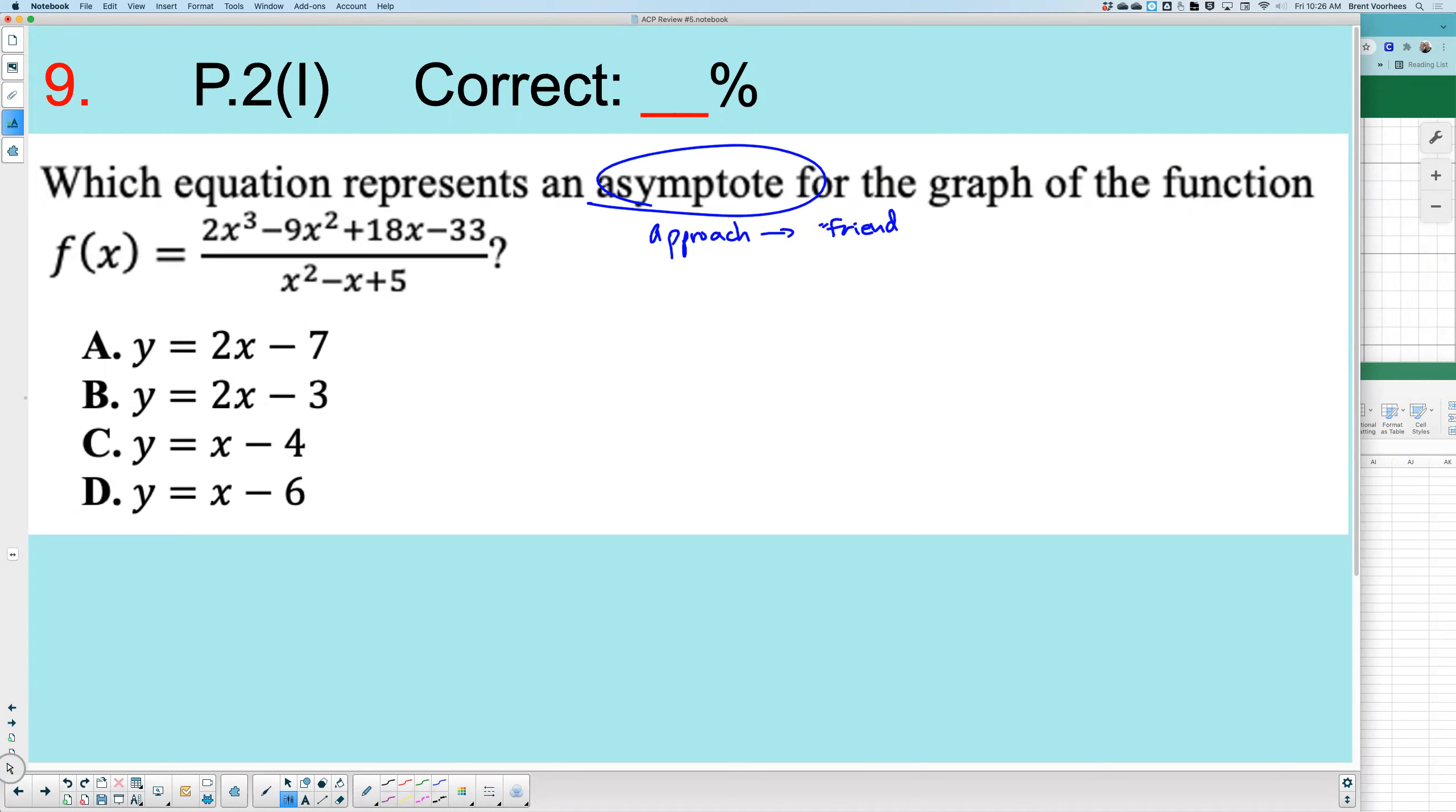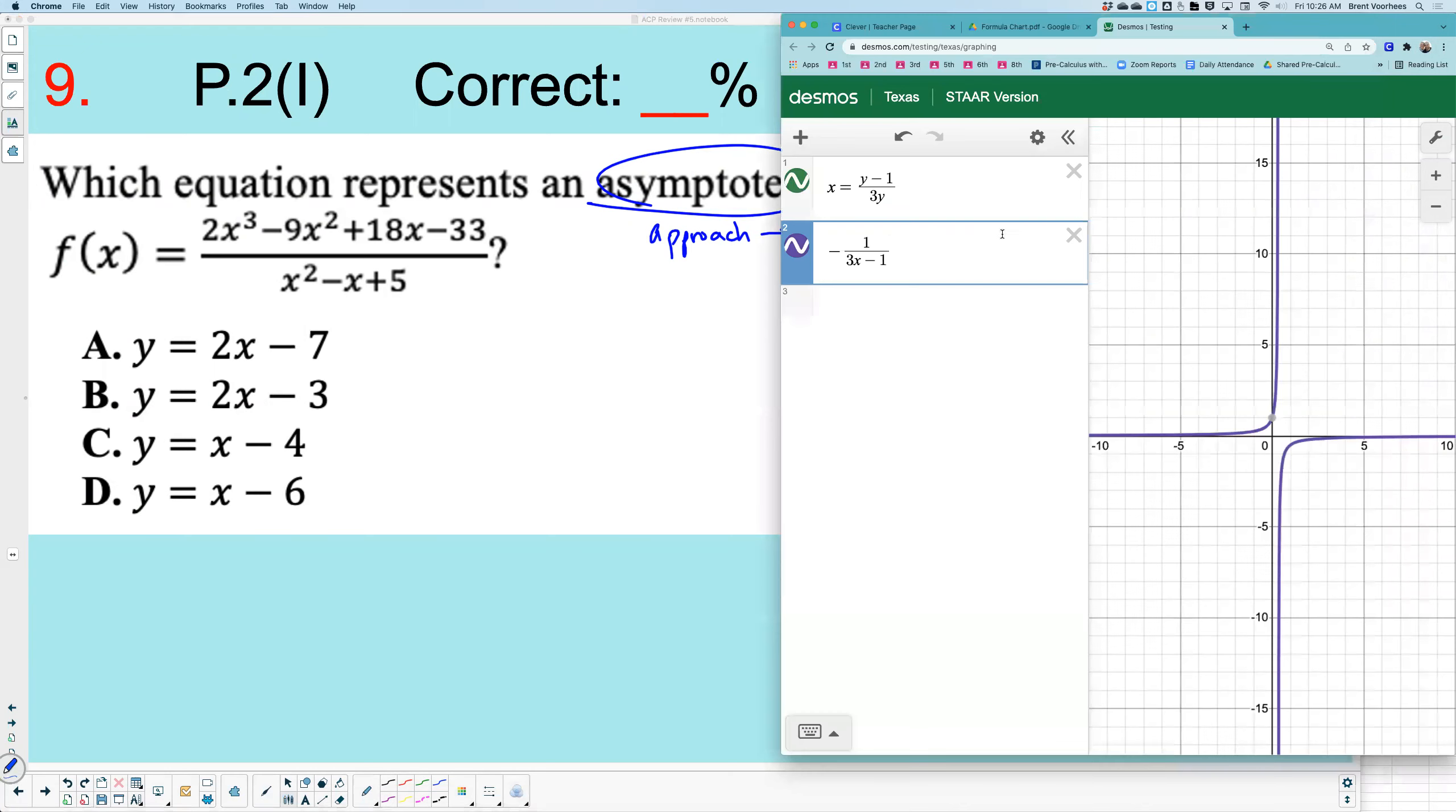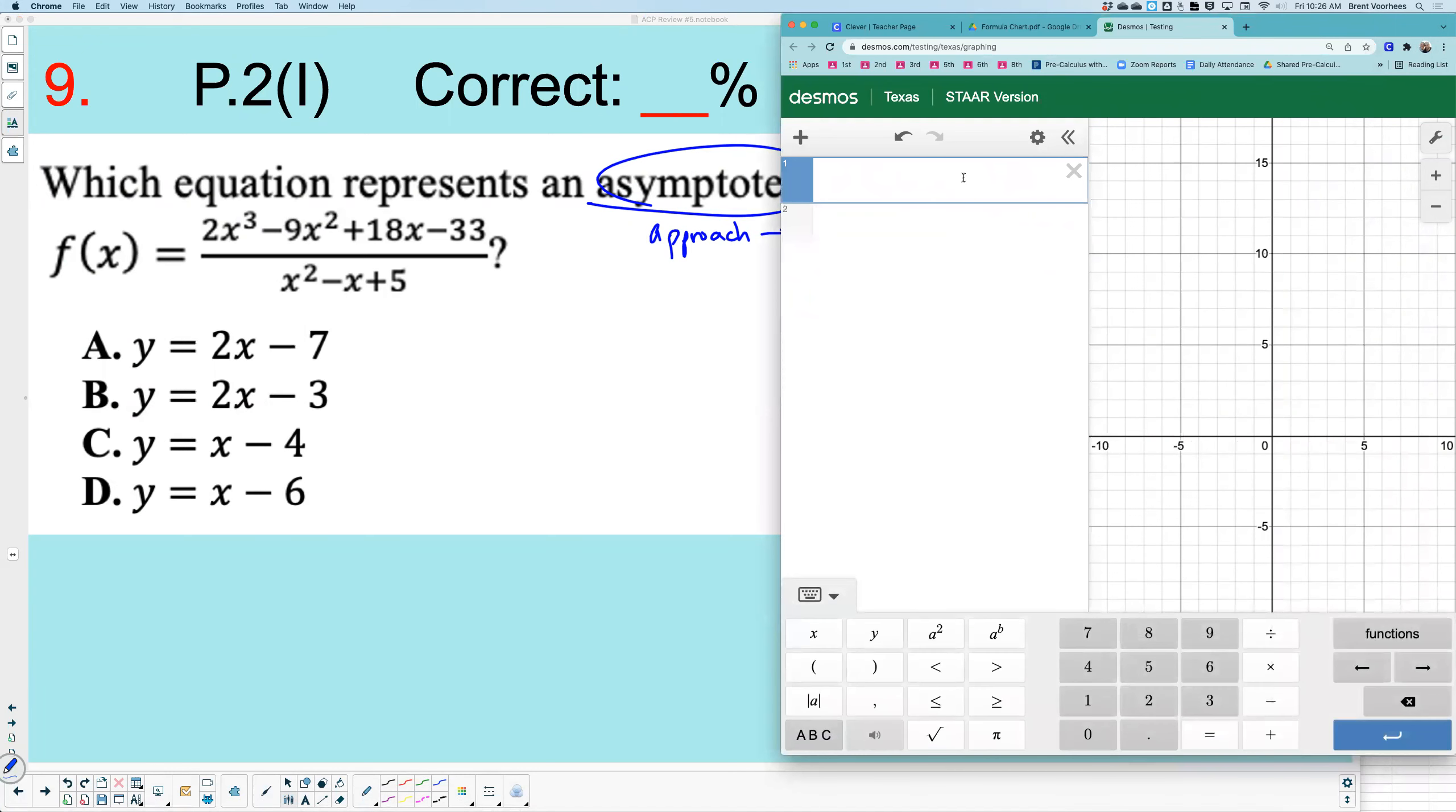So f of x equals 2x cubed minus 9x squared plus 18x minus 33 all over x squared minus x plus 5.